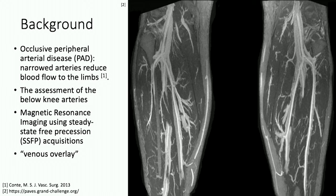Nowadays, high-spatial resolution images showing the details about the vessel wall, as well as the standoffs, can be produced by magnetic resonance imaging, such as using steady-state free processing sequences. However, due to the time period of imaging, the contrasting agent will flow through both artery and veins, which causes them both to be enhanced, and it makes it difficult to separate them apart on the images.